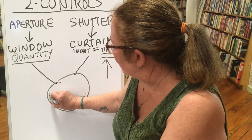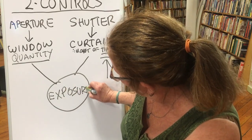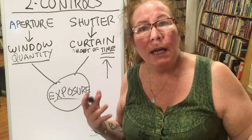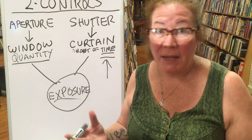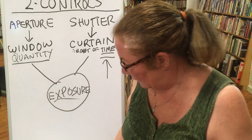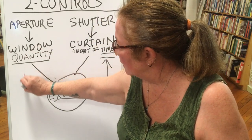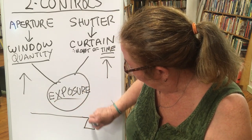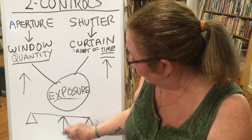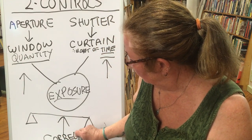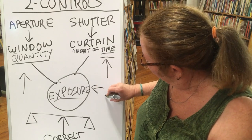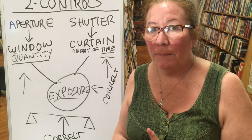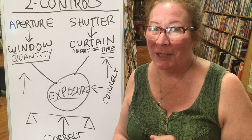Together they make an exposure — an exposure is simply an image or a photograph. When someone says they're making an exposure, they're creating an image with their camera. If you change one control you have to change the other to compensate, to keep it balanced, so you get that correct exposure. That's the basics of aperture and shutter — this is part one, I'll be back with part two shortly.